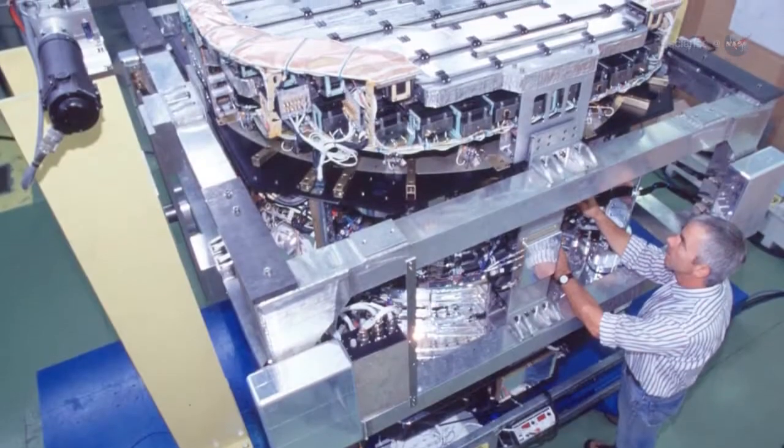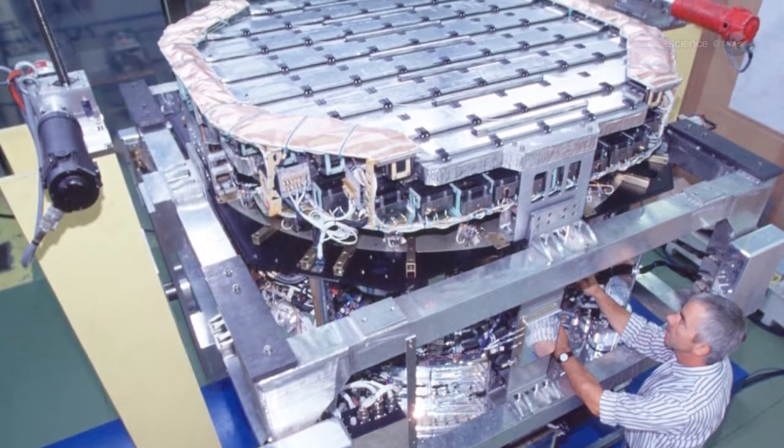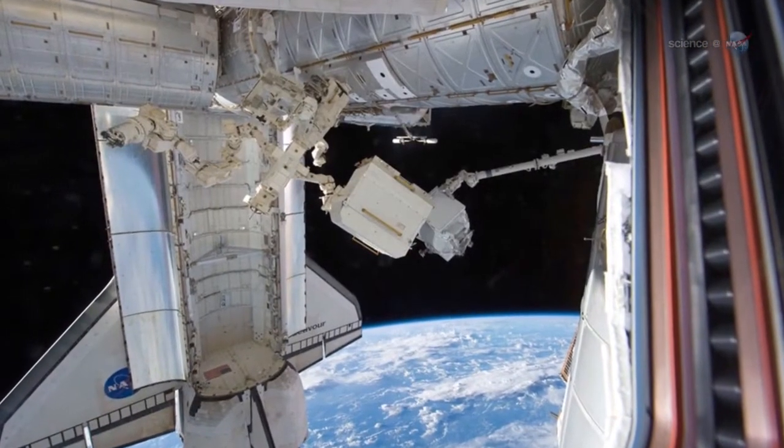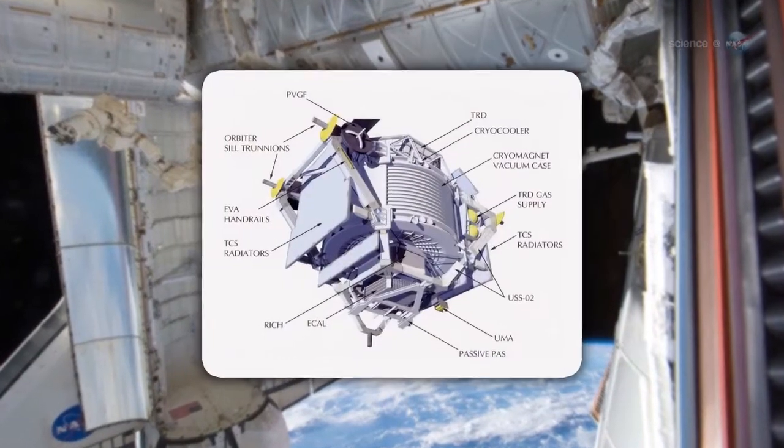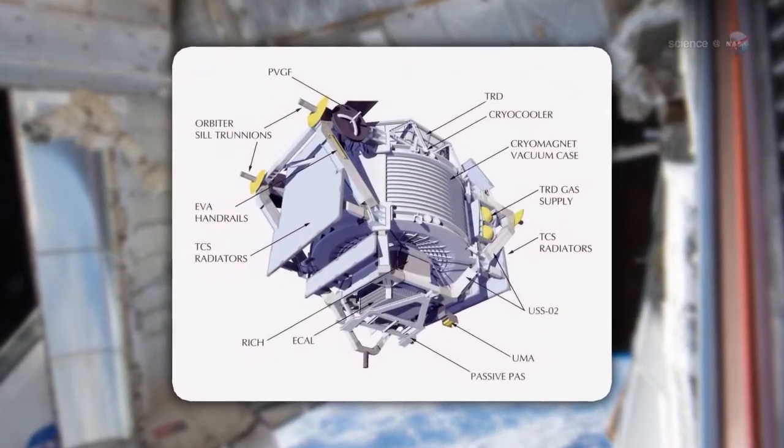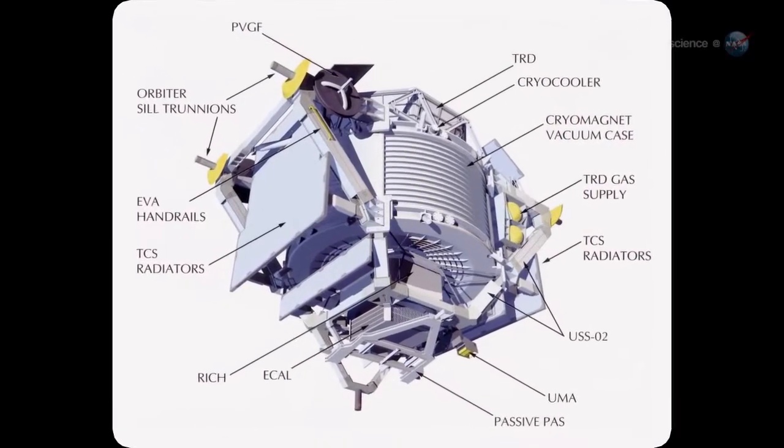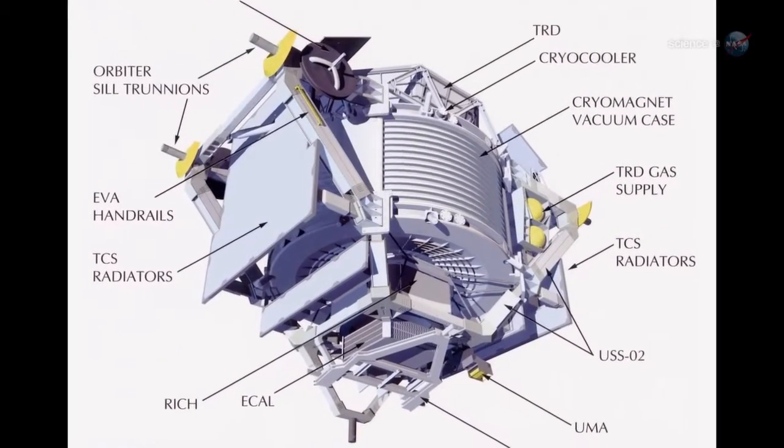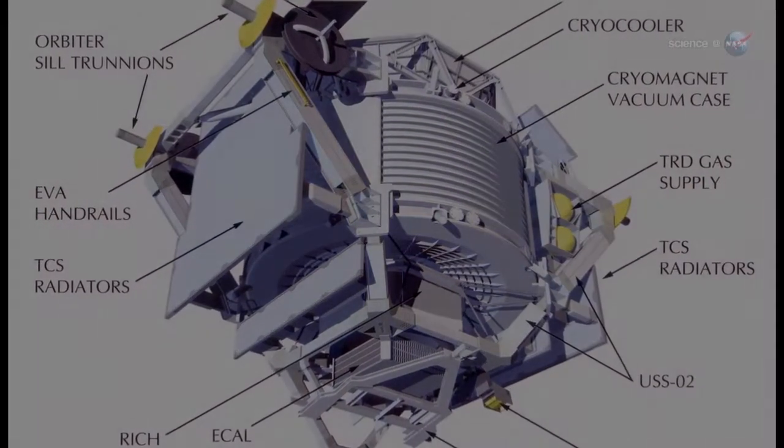The Alpha Magnetic Spectrometer, AMS for short, was delivered to the ISS by the Space Shuttle Endeavour on its final flight in May 2011. In its first 18 months of operations, from May 19, 2011 to December 10, 2012, the AMS analyzed 25 billion cosmic ray events. Of these, an unprecedented number were unambiguously identified as positrons.